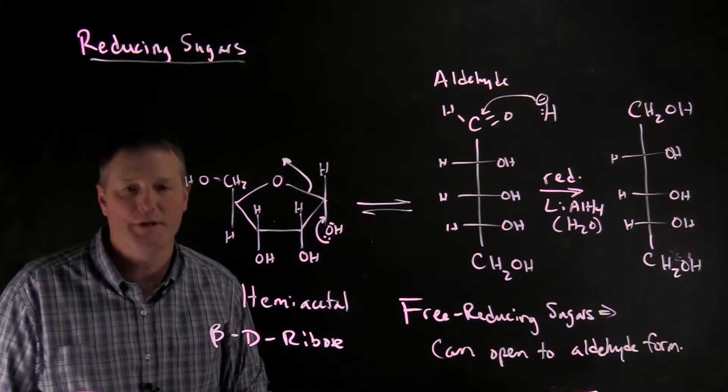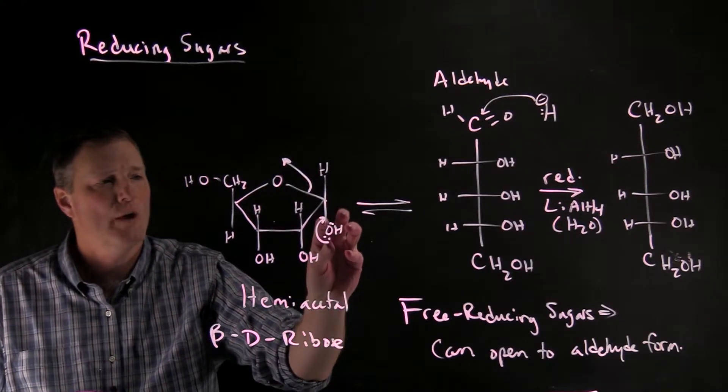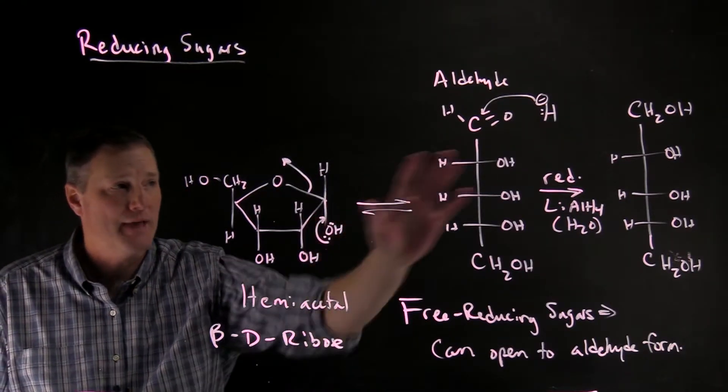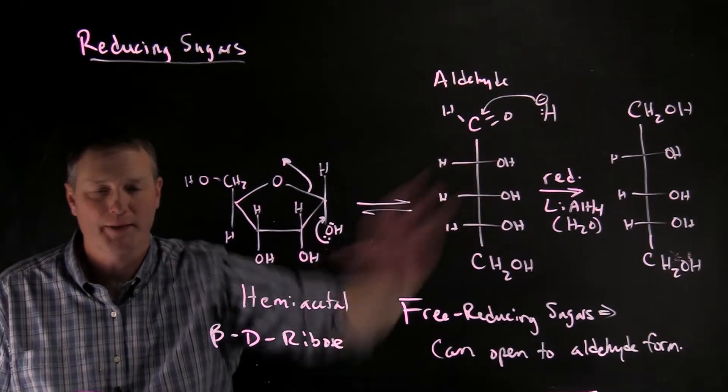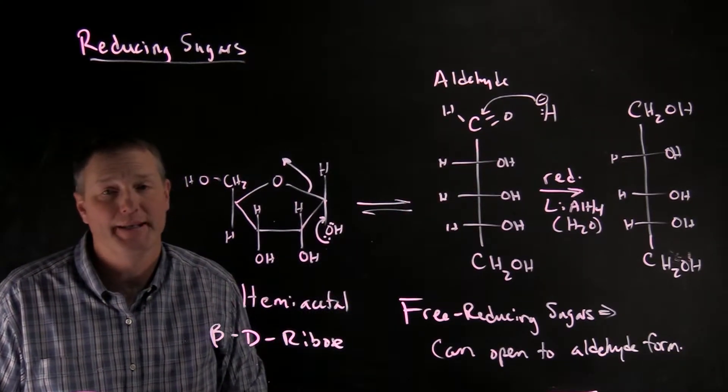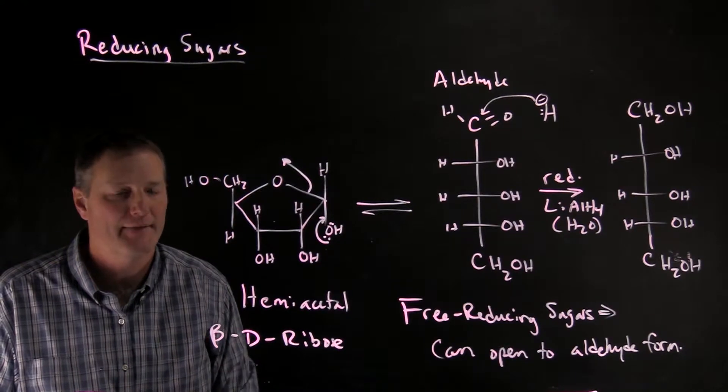Now, if for some reason this OH group were blocked and that prevented this from opening back up, that would be called a non-reducing sugar, and we'll see that in the next section.